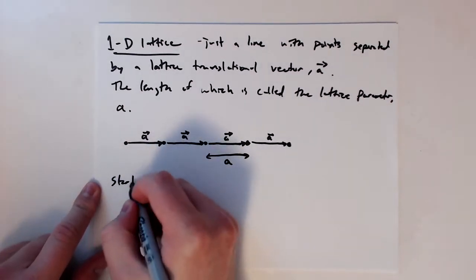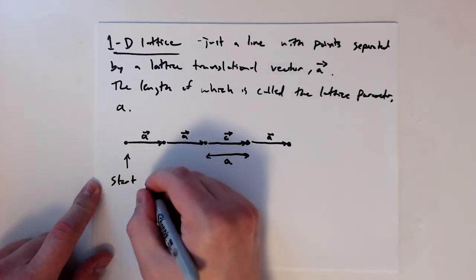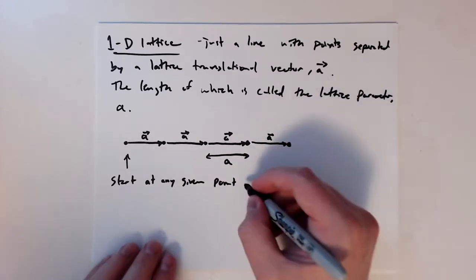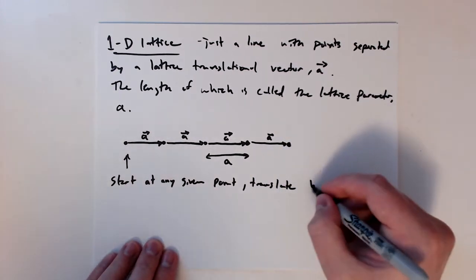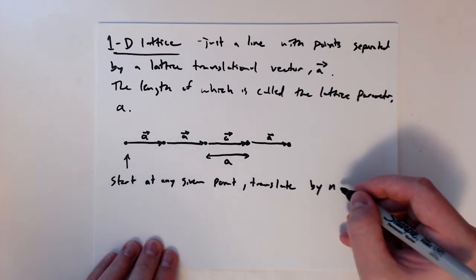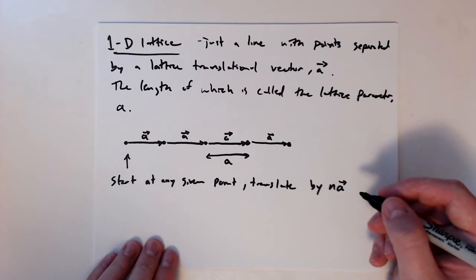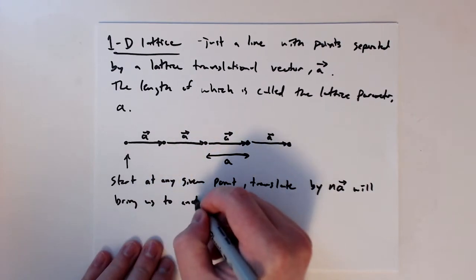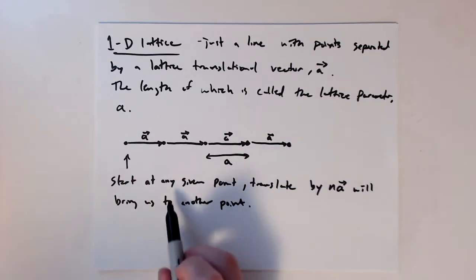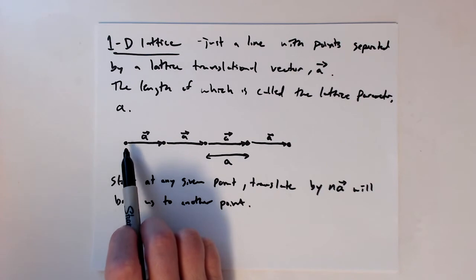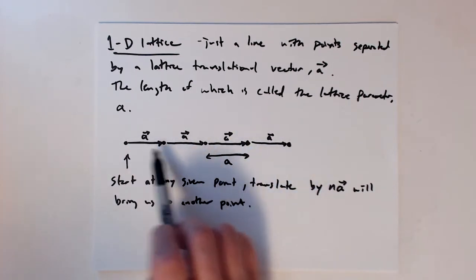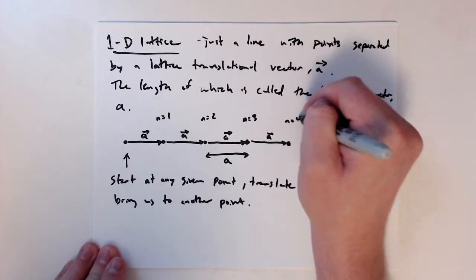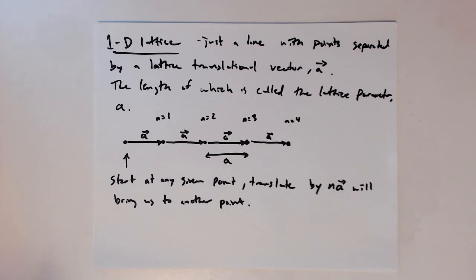The idea is that we can start with any given point and translate by some integer n times the vector A, and that will bring us to another point. So n equals one, two, three, four, and so on, away from the first point. That's the idea with this simple one-dimensional lattice — a very simple concept, but we want to build up from it.